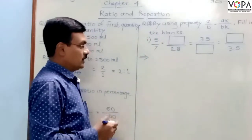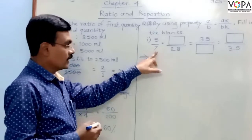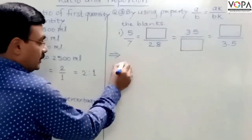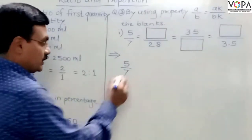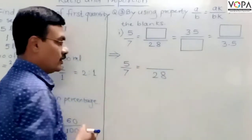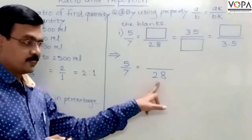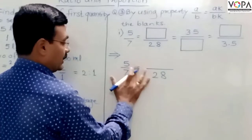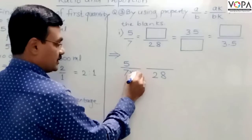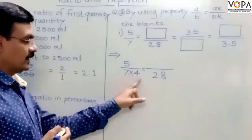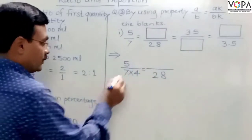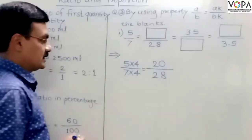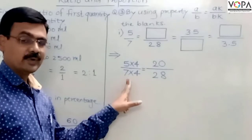The original ratio is 5 upon 7. This ratio 5 upon 7 is to be converted so that the denominator of the required ratio is 28. To convert the denominator 7 into 28, we multiply 5 upon 7 by 4. If we multiply 7 by 4, we get 28, and similarly we multiply the numerator by 4. So the numerator becomes 20.